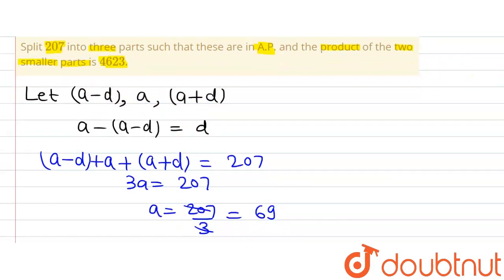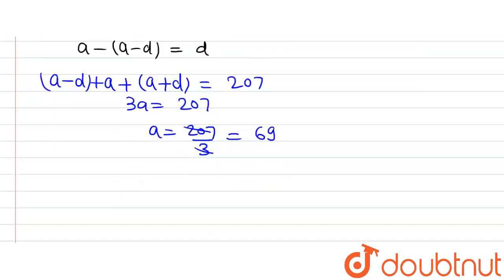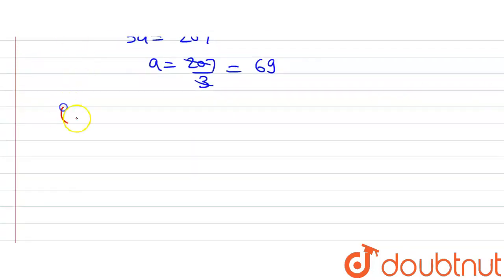So the two smaller terms are A minus D and A. And the question is saying that the product of smaller terms, that is A minus D and A, is equal to 4623.